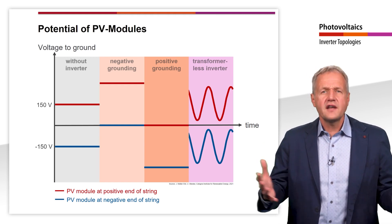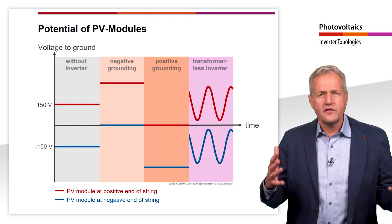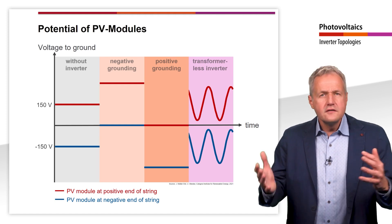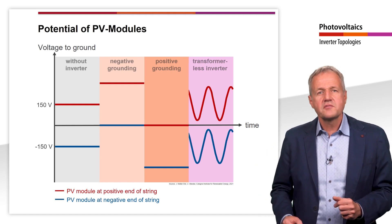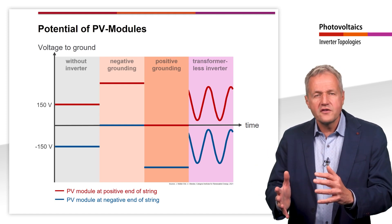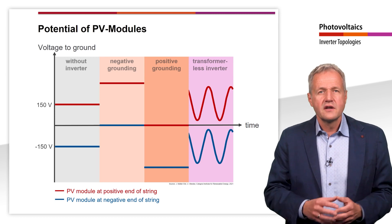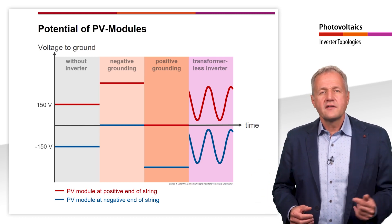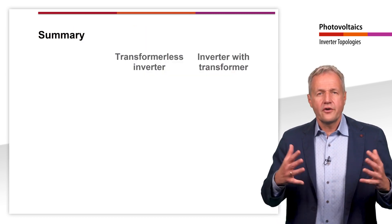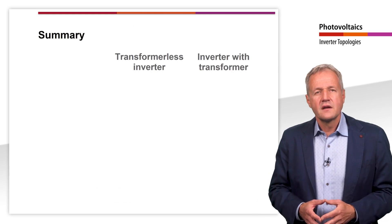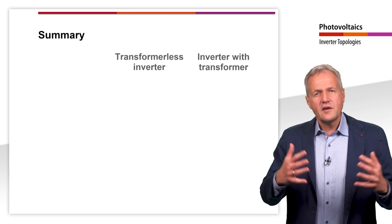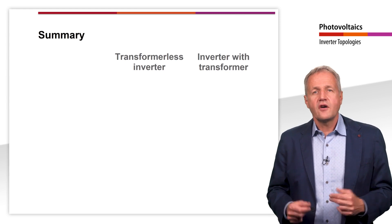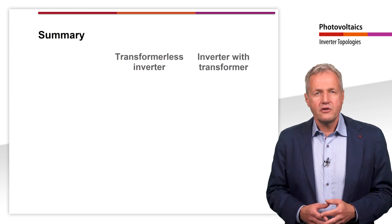If, on the other hand, an inverter with a transformer is used, there is no direct conductive connection between the modules and the grid. With such an inverter, the modules can therefore be earthed. Let's summarize the advantages and disadvantages of the different topologies.